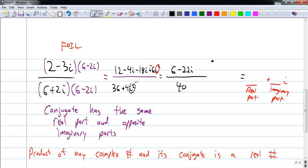Now what I need to do is to write this as two fractions. 6 over 40 minus 22 over 40i. And then I need to reduce each part. 6 over 40 is 3 over 20. That's my real part.